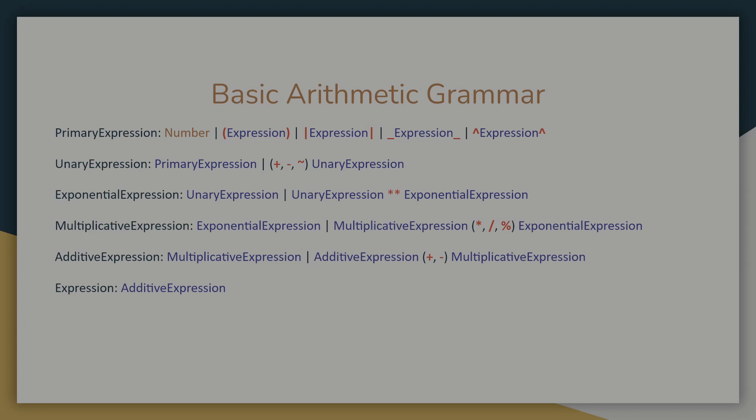This is your language, so you can make it how you want. These underscore brackets represent floor brackets, and the caret brackets represent ceiling brackets. These will allow us to round expressions up or down to the nearest integer.